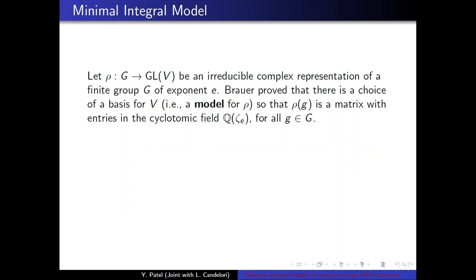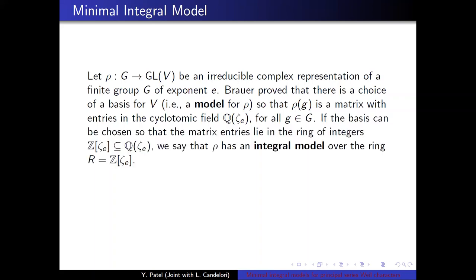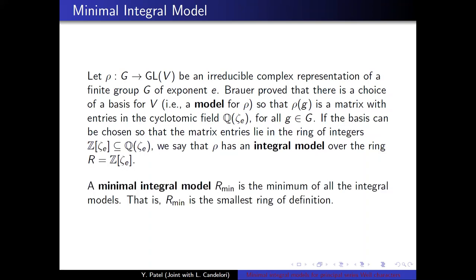So I'm going to define a minimal integral model. Let rho be an irreducible complex representation of a finite group g of exponent e. Brauer proved that there is a choice of a basis for V, that is a model for rho, so that rho of g is a matrix with entries in the cyclotomic field Q adjoined with zeta e for all elements of g. If the basis can be chosen so that the matrix entries lie in the ring of integers Z adjoined with zeta e, we say that rho has an integral model over the ring R equal to Z adjoined with zeta e. A minimal integral model Rmin is the minimum of all the integral models. That is, Rmin is the smallest ring of definition.